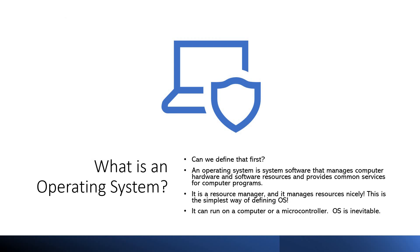What is an operating system? We need to understand this first before we get into real-time operating system. An operating system is a software — system software — which manages computer hardware, software resources, and provides all the common services for computer programs. Put it in a very simple way: it is a resource manager which manages the resources very nicely. That is the simplest way to define an operating system.